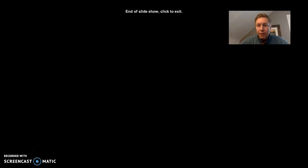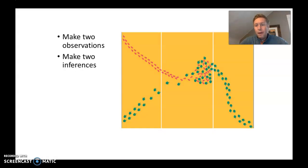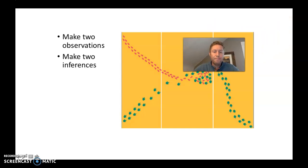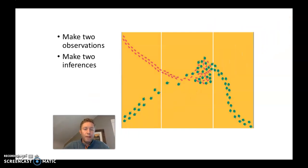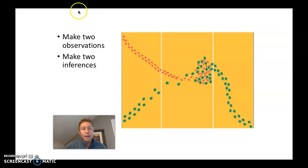So today you learned about two types of observations — qualitative and quantitative — and you also learned about what an inference would be. We will talk more about the scientific process later this week.